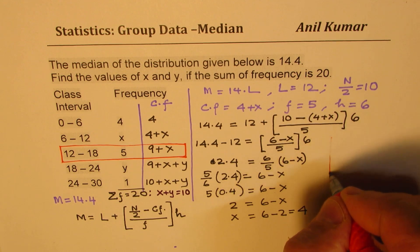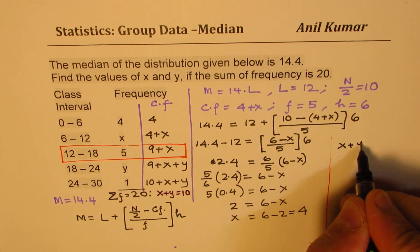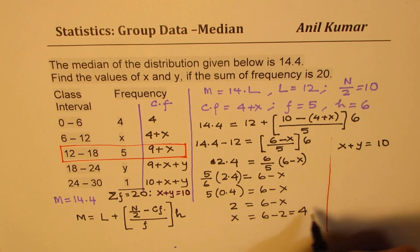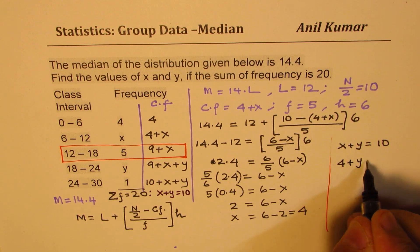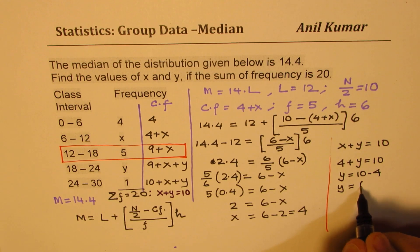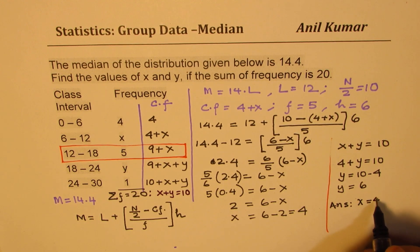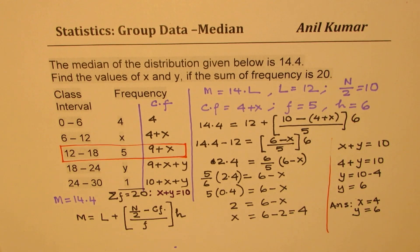Once we have found X equals 4, we can easily find Y. We know X plus Y equals 10, so 4 plus Y equals 10, giving Y equals 6. So our answer is X equals 4 and Y equals 6. That is how we solve such a question. I hope now you understand how to work with the median in grouped data. Thanks for watching and all the best.